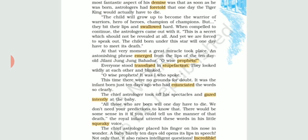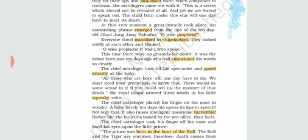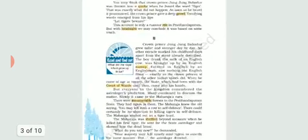When the king was born, the chief astrologer predicted that the cause of his death would be a tiger. It was rumoured that the king, who was born just 10 days back, started speaking — something which cannot be believed. A baby of merely 10 days started speaking, and he said, 'Let the tigers beware.' So when he heard this prediction that a tiger would be the cause of his death, those were the words he said: 'Let the tigers beware.'